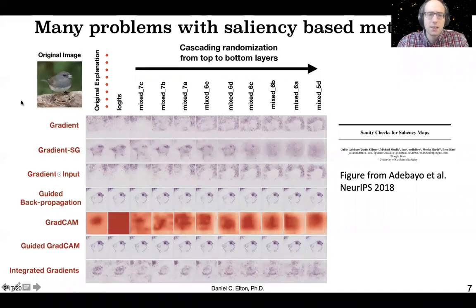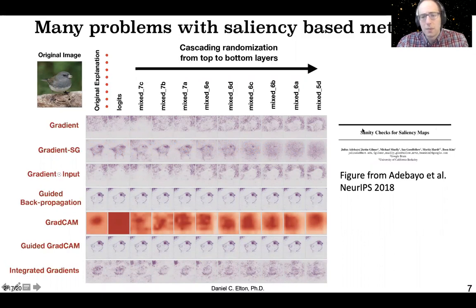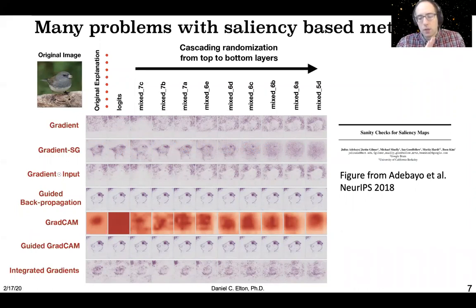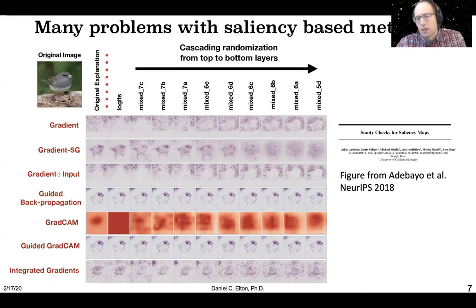There are many pitfalls with these techniques. Saliency maps, which are unfortunately one of the most popular, have some of the most pitfalls. There's a great paper called 'Sanity Checks for Saliency Maps' where they do a number of experiments, including randomizing different layers in the neural net. They find that as you randomize more and more layers, the output of a lot of these saliency visualizations don't really change — what many of these methods appear to be doing is just showing what's going on in the first layer or two, which is basically just edge detection. That's not really useful.